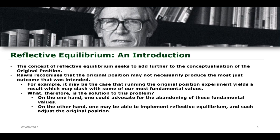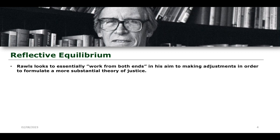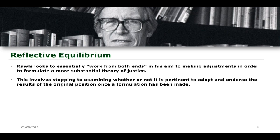Rawls does not accept that we have to take the original position and whatever results it gives us as the only thing that we can do. He recognizes that you can make adjustments, which is what reflective equilibrium exists to do. What Rawls is doing here is essentially looking to work from both ends, with the aim of making adjustments in order to formulate a more substantial theory of justice. It involves stopping to examine whether or not it is pertinent to adopt or endorse the results of the original position once a formulation has been made. We can then look at the results and think about whether we can make any changes to achieve this equilibrium.